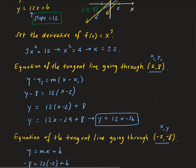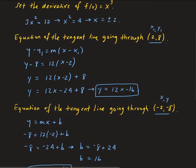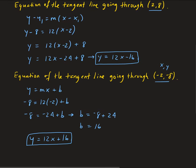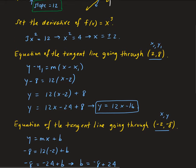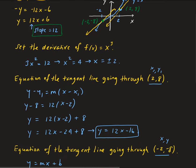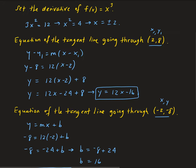So for the first tangent line, it has a y-intercept of negative 16, and the second tangent line has a y-intercept of 16. Those are our two tangent lines — they both have a slope of 12, so they are parallel as indicated in the beginning, and they have different y-intercepts, as expected.